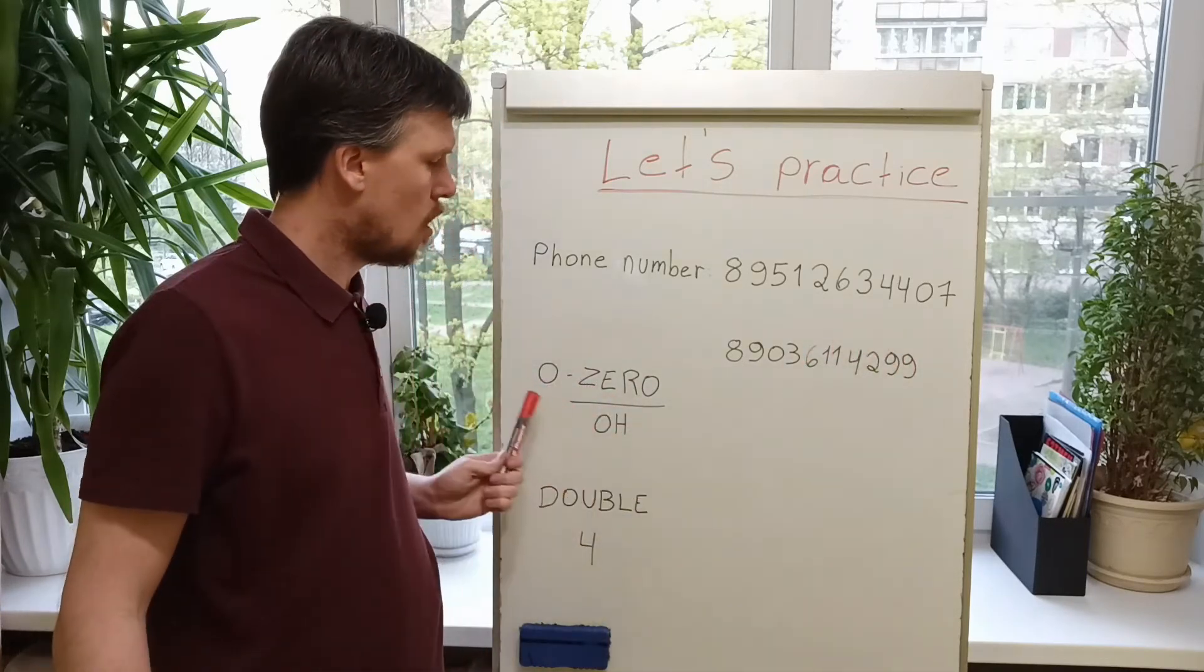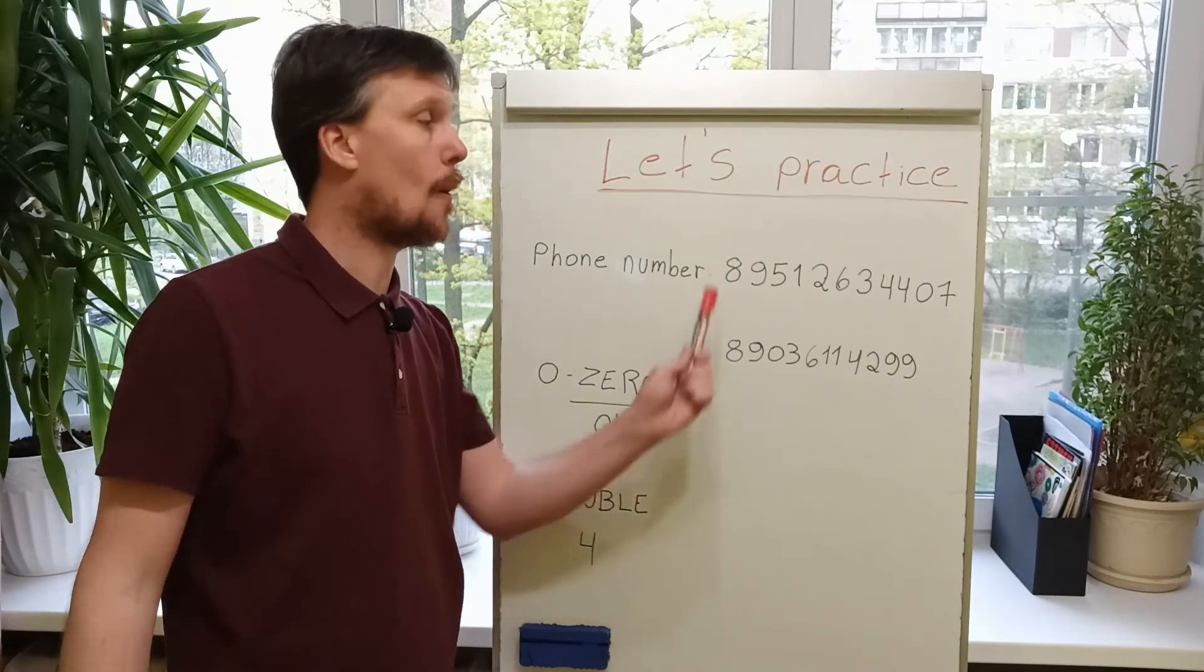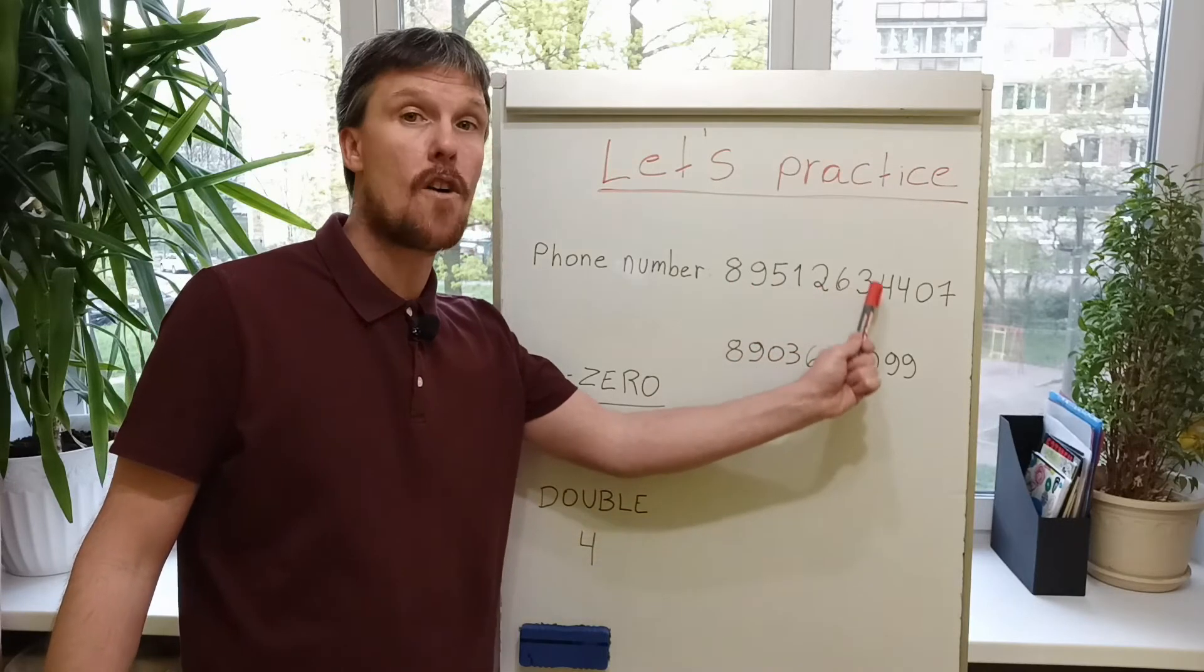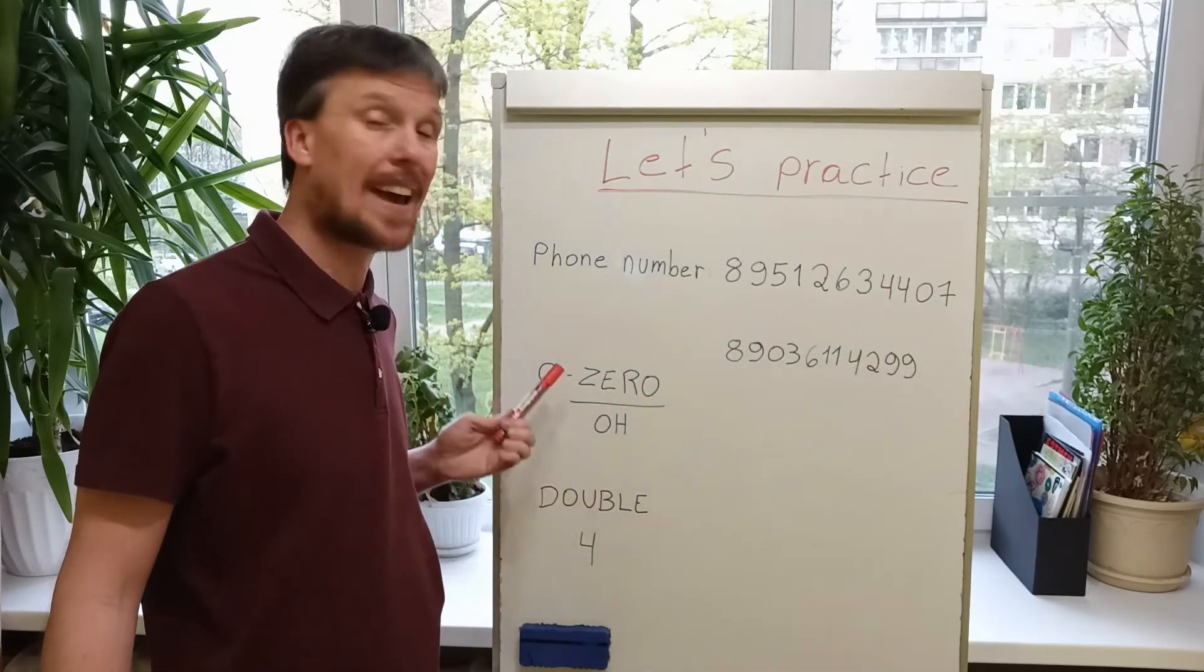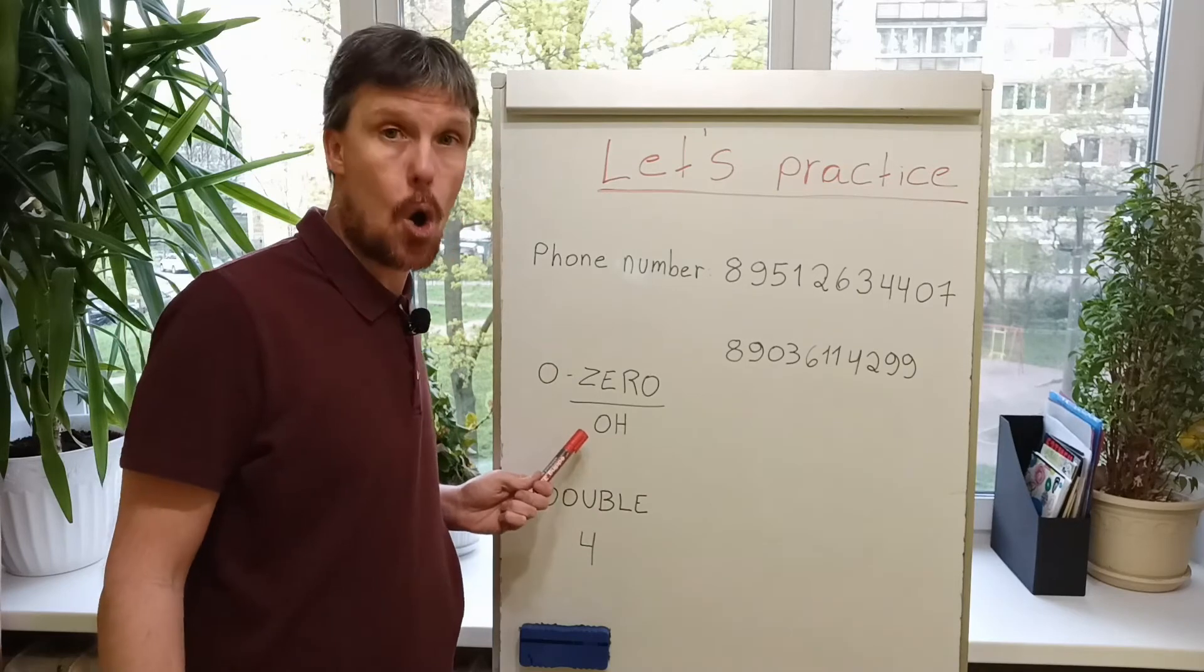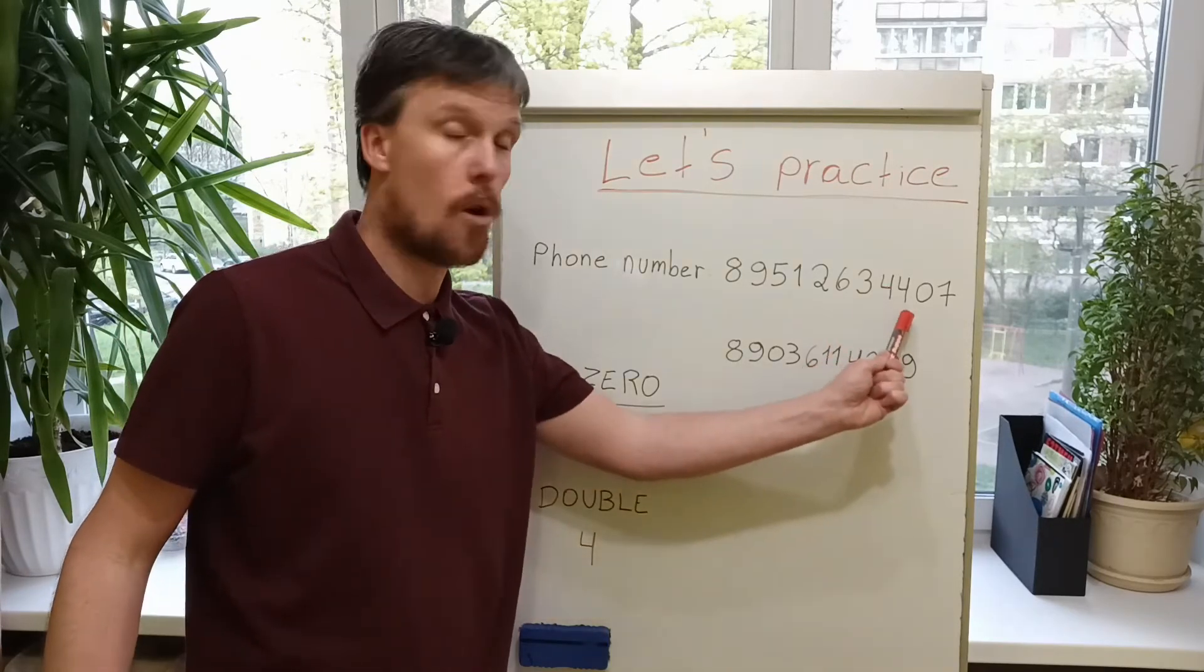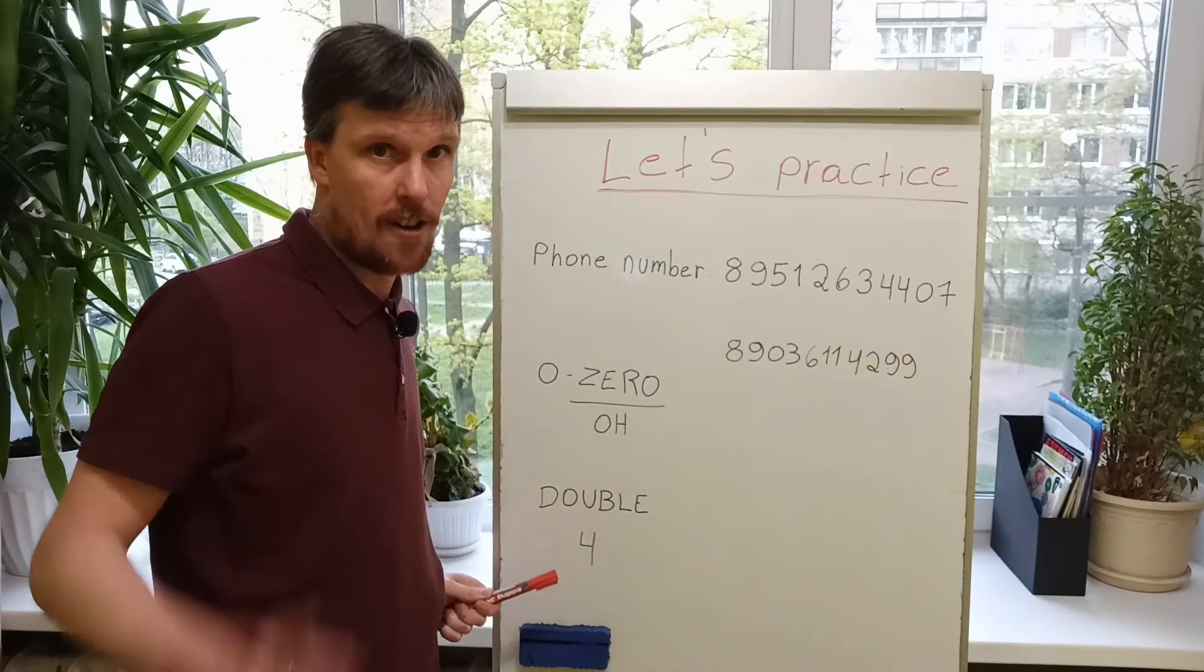Zero. Zero. Or O. For example, Eight. Nine. Five. One. Two. Six. Three. Four. Four. O. Seven. The number zero you can say zero or O. Attention! Four. Four. Or double four.